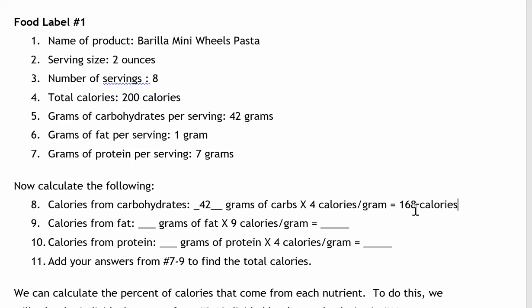Now let's repeat this for fat. So number nine says calories from fat. I look up at number six to find the grams of fat. I had one gram of fat. So I'm going to fill one in for grams of fat. So one gram of fat times nine calories per gram. One times nine is nine calories.